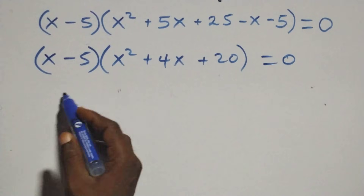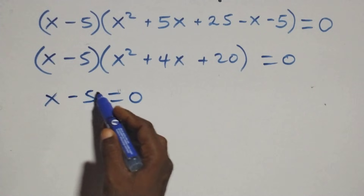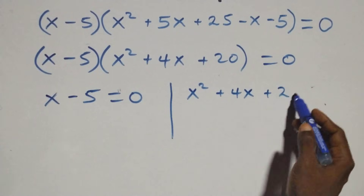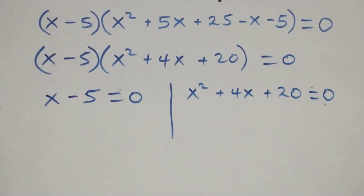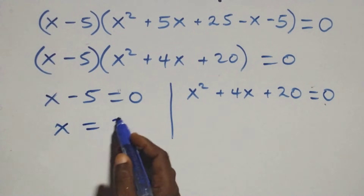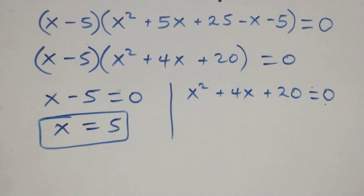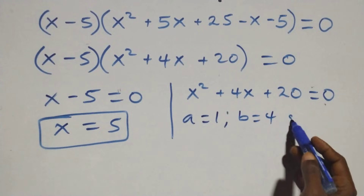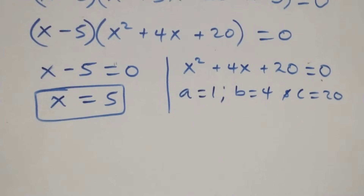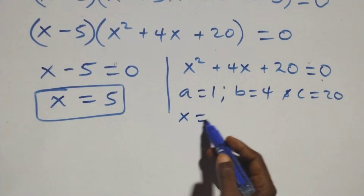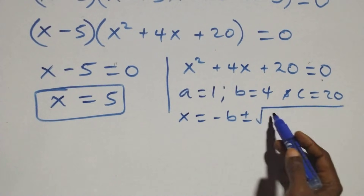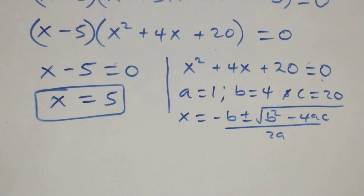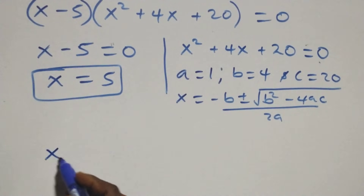We now have two possible cases: first, x minus 5 equals to 0, or x squared plus 4x plus 20 equals to 0. Solving the first case gives x equals to 5, which is one solution. For the quadratic equation, a equals 1, b equals 4, and c equals 20. Applying the quadratic formula: x equals to minus b plus or minus square root of b squared minus 4ac, over 2a.